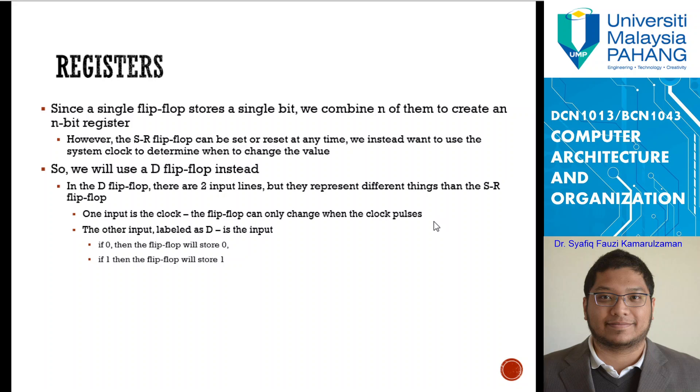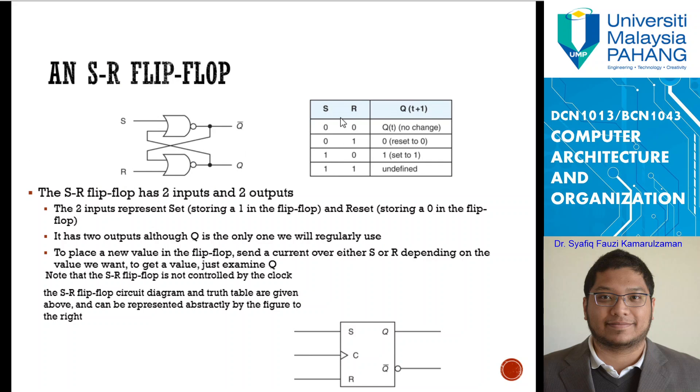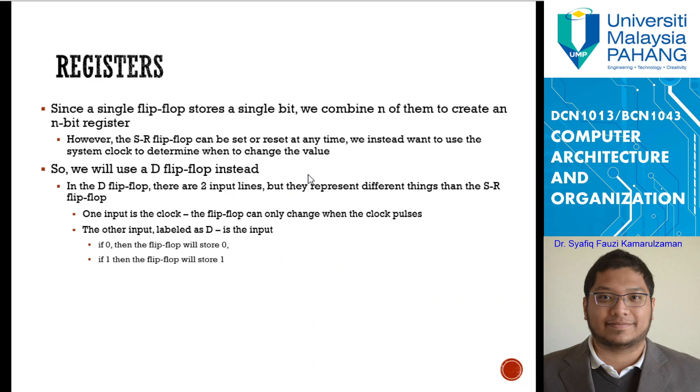For registers, when you have a single flip-flop storing a single bit, we can combine a number of them to create an N-bit register. You can see that this SR flip-flop can store one bit of data. If you combine 64 of them, you can store 64 bits. 64 bits is 8 bytes.